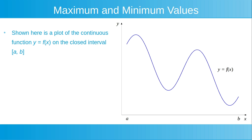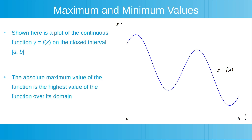Looking at the plot to the right, the absolute maximum value of the function is the highest value of the function over its domain. That value is shown here, highlighted in red. When we refer to the domain of the function, we're referring to the set of possible inputs to the function. In this example, we've defined the domain of the function to be the closed interval from a to b.